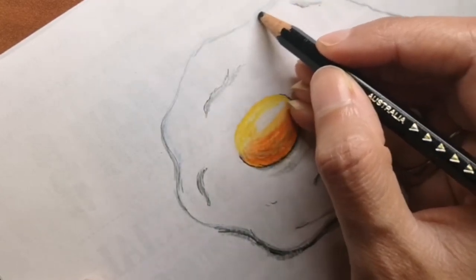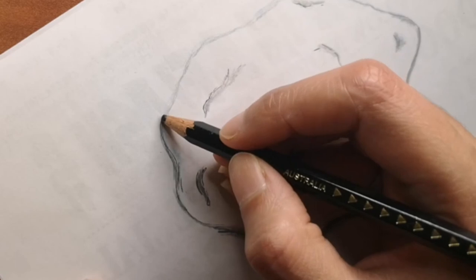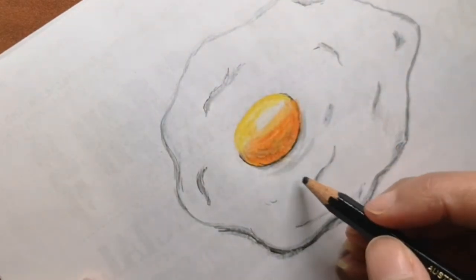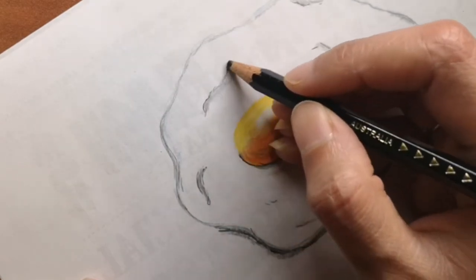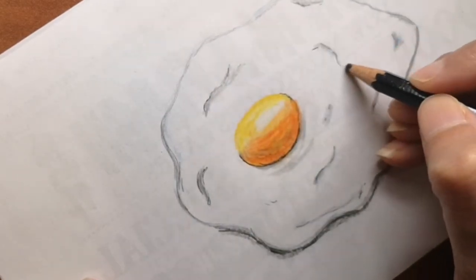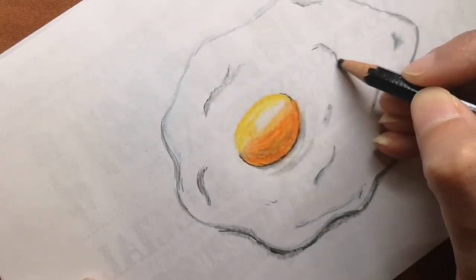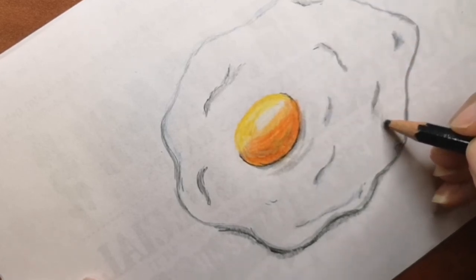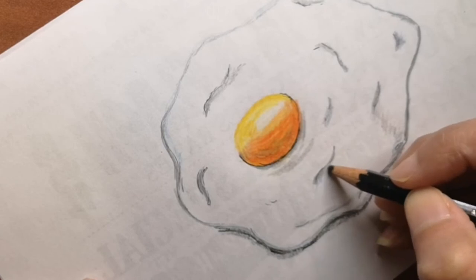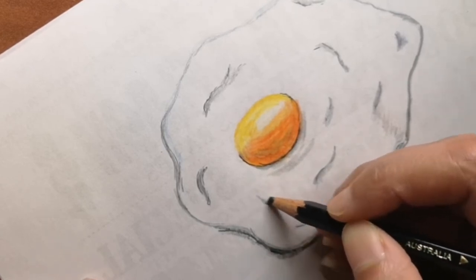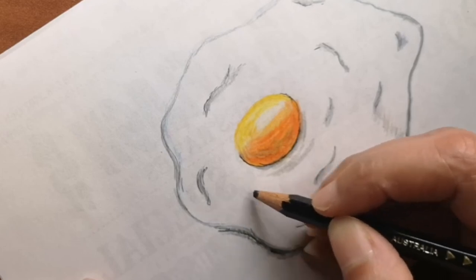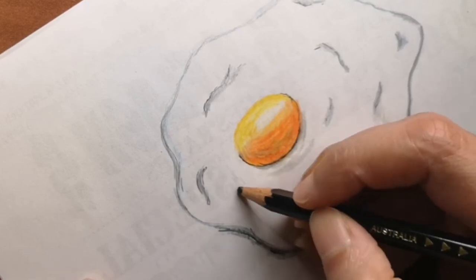Sometimes when you cook or fry eggs, you can see charred areas on the corners of the egg, like brown bubbly areas. You can draw those as well on the side of the egg, like crunchy crumbly pieces, to add more details if you want.